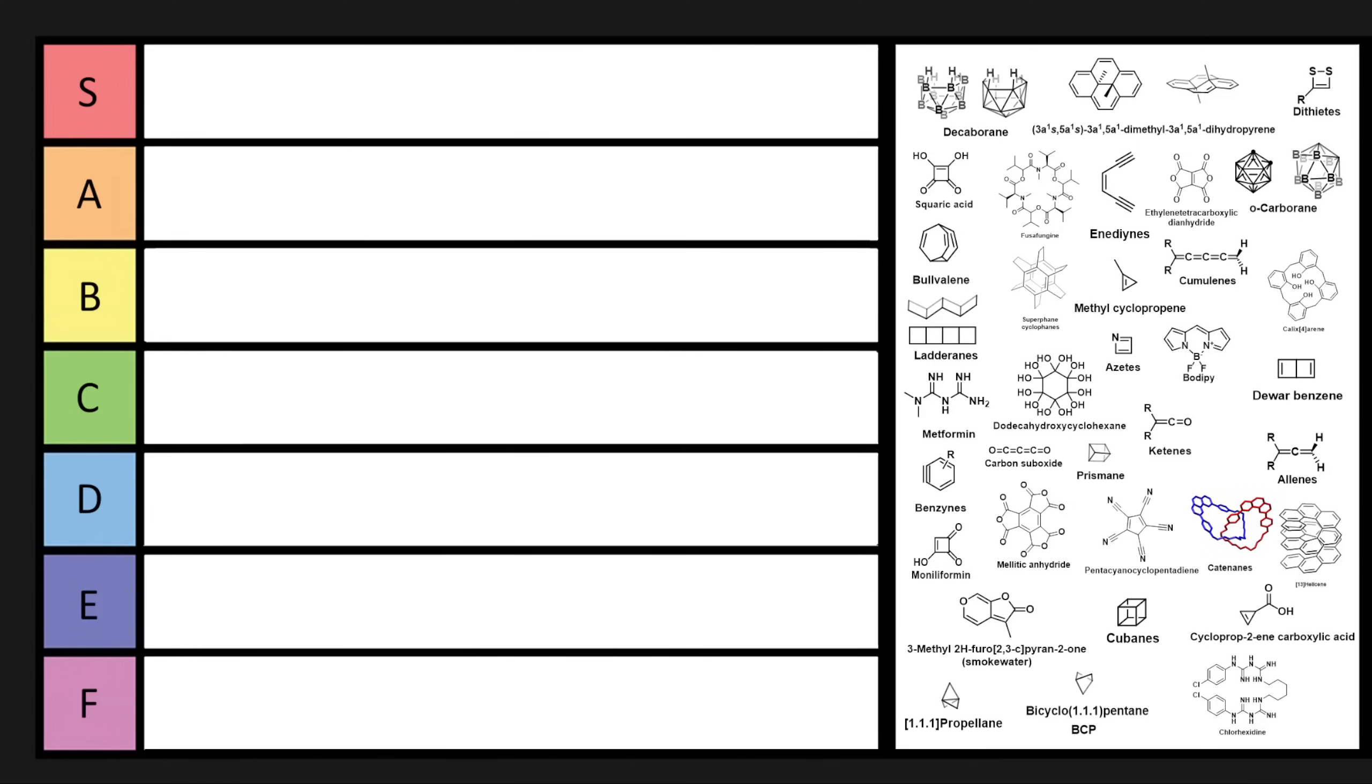So without further ado, let's get started. Let's pick a nice easy one like squaric acid. So squaric acid is called an acid because, despite how it looks lacking any specific carboxylic acid groups, it's a relatively acidic acid. Now it's a square, and it's a square with quite a lot of double bonds, which is kind of interesting.